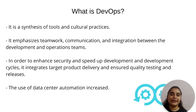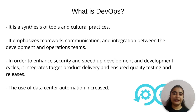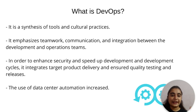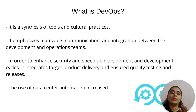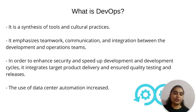DevOps is used to enhance security and speed up processes. It ensures quality testing — for example, if you do manual testing on your application and it works fine, but when you deploy it a bug appears. If you use a good DevOps tool, you would never face that bug in production. DevOps makes processes automated, meaning manual work decreases and automation increases.